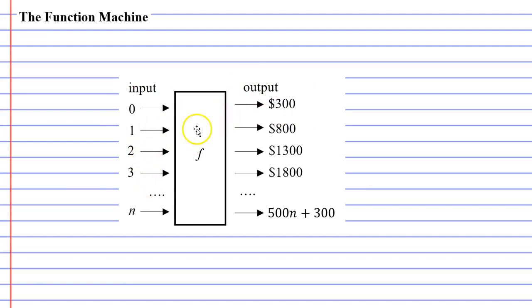We have other inputs with their associated outputs. You'll also notice that when we input the variable n, it outputs an equation, 500n plus 300. And this equation actually shows us what the function machine is doing. We can see that each time it takes a variable, multiplies it by 500 and then adds 300.